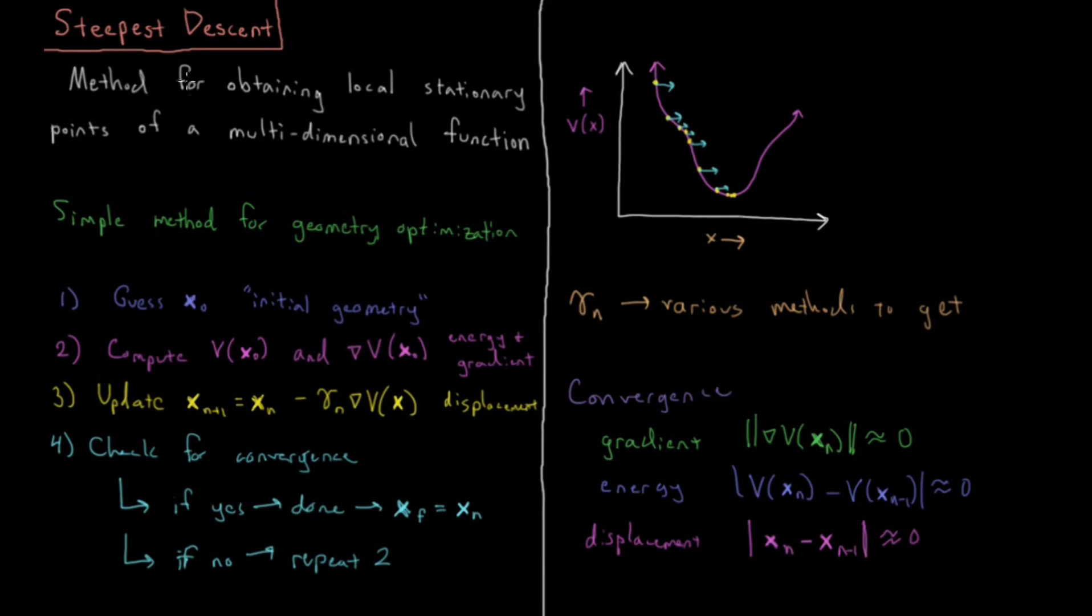So a lot of that is geometry optimization in general. The part which is steepest descent specifically is this third part, which is this particular method for updating the geometry between various iterations.